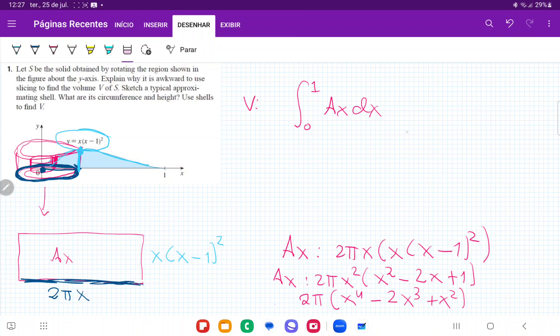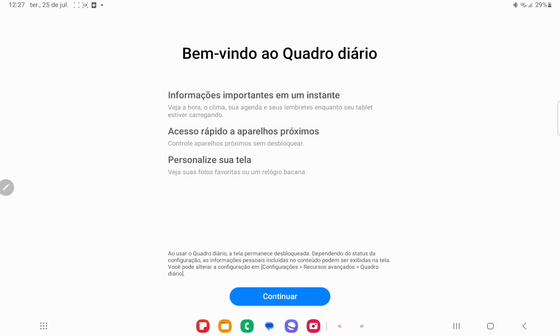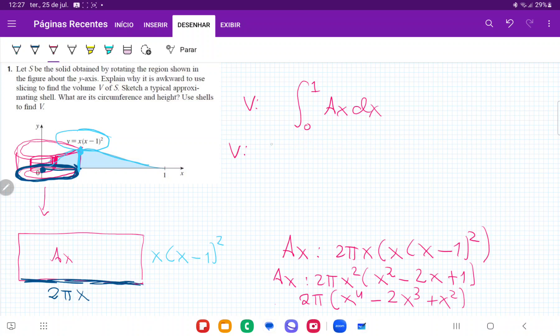Now I'm ready to just substitute this back in my volume. So my volume is the integral from 0 to 1 because that's how I'm summing up my shells, and then the 2π, because it's a constant, I'm going to put it outside, and then I'm just going to copy this.